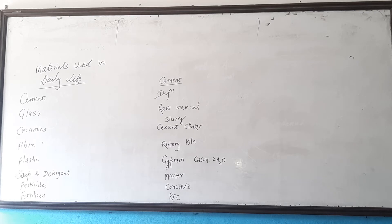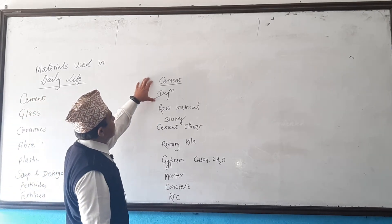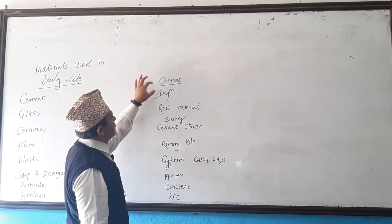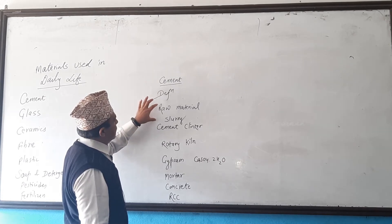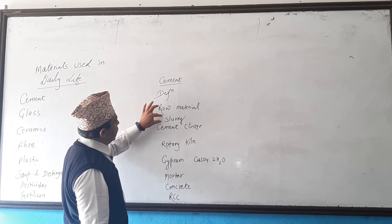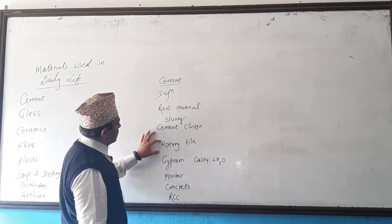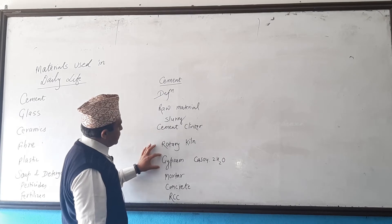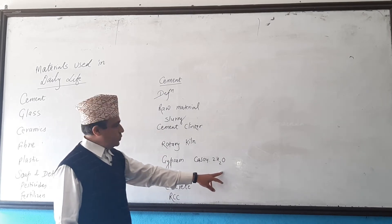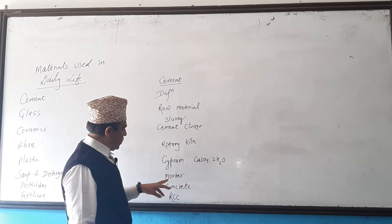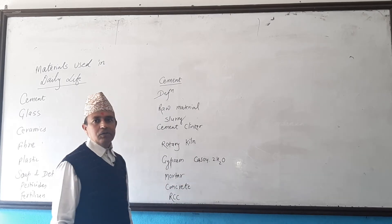In today's class we will be discussing mainly about cement — its definition, raw materials, slurry, cement clinker, rotary kiln, gypsum (CaSO₄·2H₂O), mortar, concrete, and RCC.